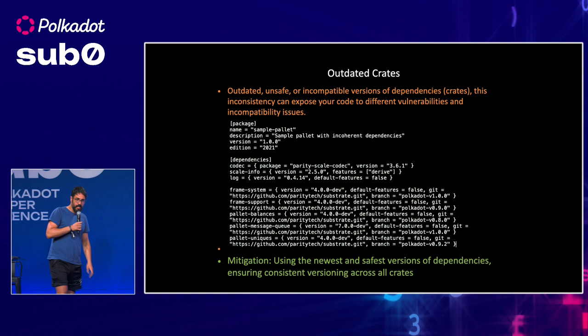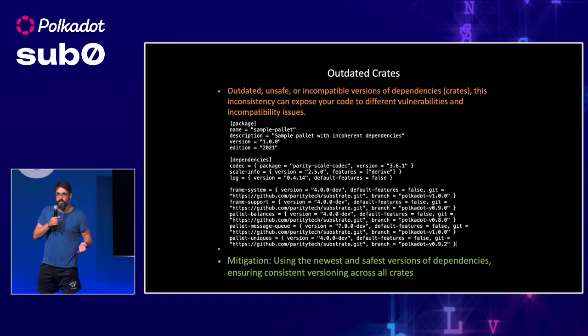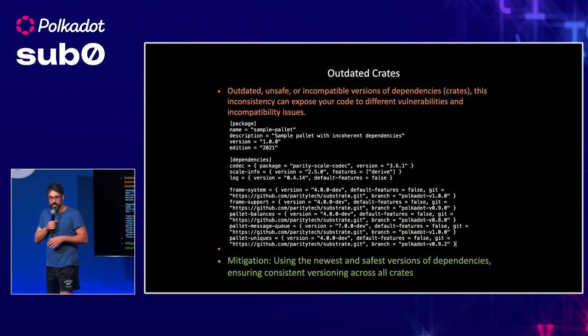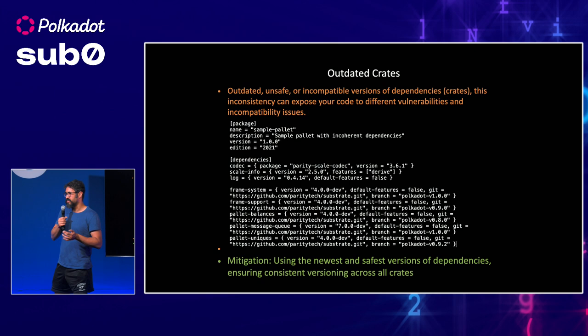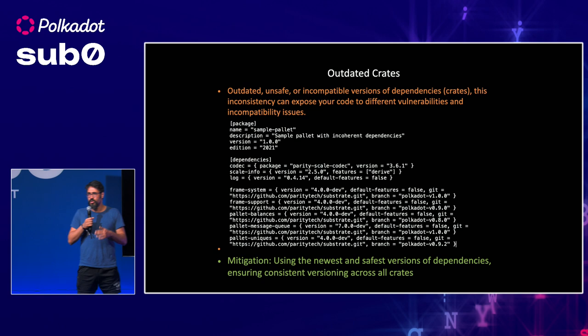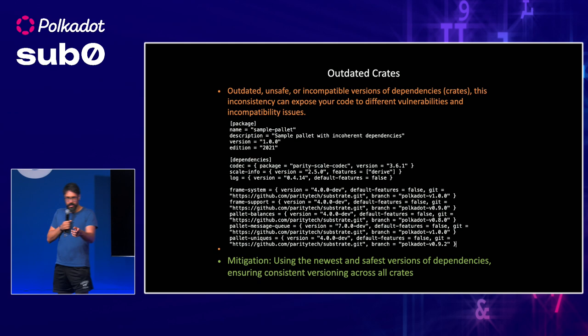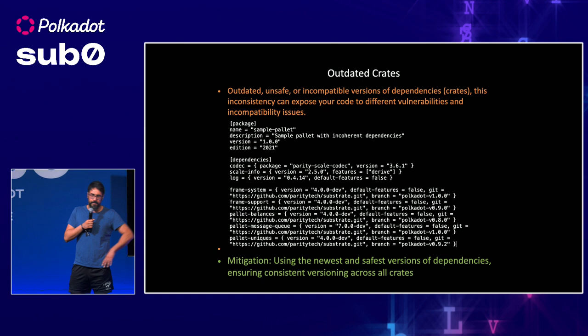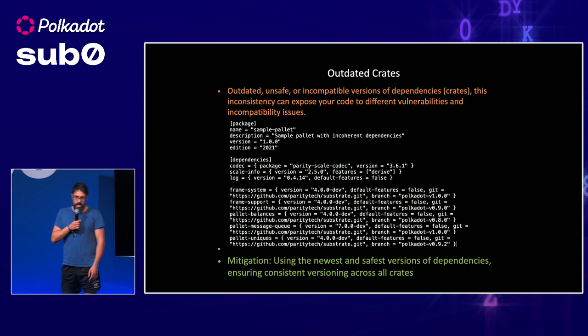The last vulnerability is outdated crates. This is also a Rust problem, but it gets worse on blockchain and Substrate. If you use outdated, unsafe, or incompatible versions of dependencies or crates, it can introduce inconsistency to your code and cause not only vulnerabilities and security issues, but also performance problems, and makes it difficult to expand the code. Looking at a Cargo.lock file, if a developer uses different versions of Substrate, that makes your code messy and probably introduces security issues and inconsistencies. The mitigation is straightforward: use the newest and safest version of dependencies and ensure consistent versioning across all your crates.